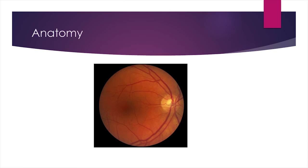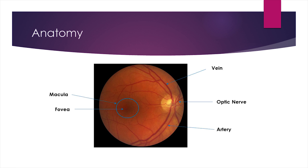The direct ophthalmoscope allows you to look at the health of the retina, including the optic nerve, the veins and arteries, the macula, and the fovea. It produces an upright image of about 15 times magnification.